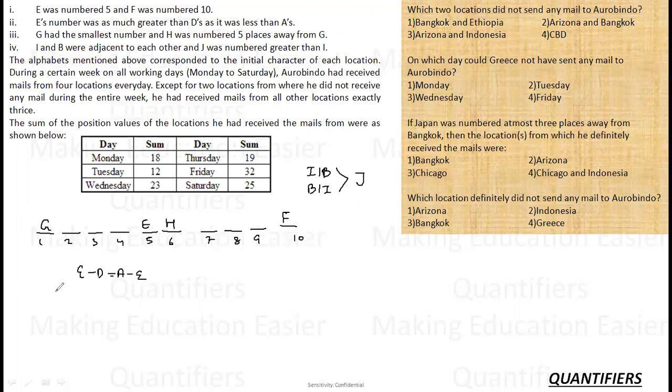I and B were adjacent to each other and J was number greater than I, so I and B are adjacent to each other and J is greater than I and B both. Since they are adjacent, it has to be greater than both. Now, where can I place it? If I am placing I and B here, then J will be placed here definitely, but this is not possible because A has to come on this side.